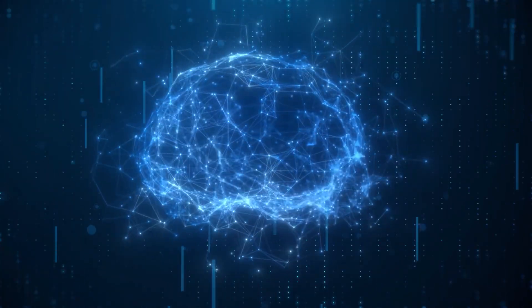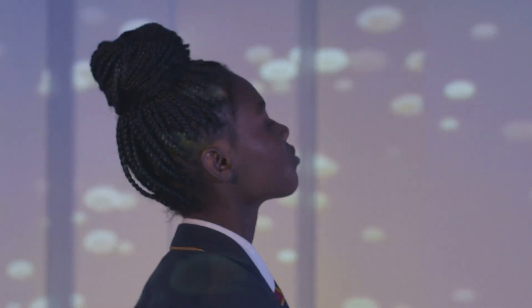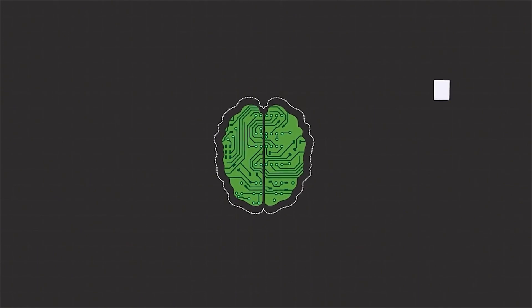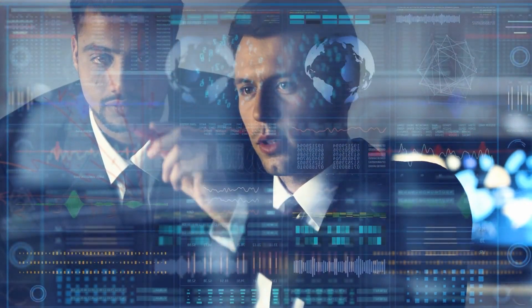Our brains are remarkable pattern recognition machines. They constantly seek order and meaning in the information around us. What if, through honing this ability, we could become more attuned to the subtle signals that hint at future events? Could synchronicity be our brain's way of forecasting what lies ahead?